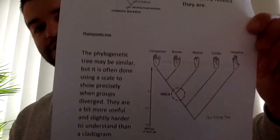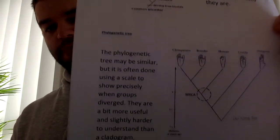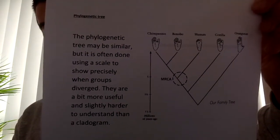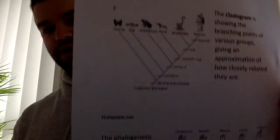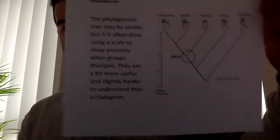So that's how cladograms and phylogenetic trees work. You've got to be able to look at them and interpret them. The other concept we're going to look at is convergent and divergent evolution.